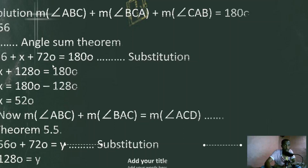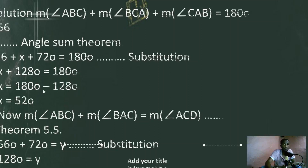60 plus 72 is 132. So X plus 132 equals 180 degrees. You take 132 to the right side — it changes to negative. So X equals 180 minus 132, which gives X equals 52 degrees.